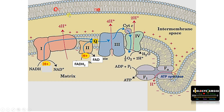First you should understand the inner mitochondrial membrane. This is the outer membrane of mitochondria and this is the inner membrane where all multi-enzyme complexes are located and where electron transport chain occurs. The space between the outer membrane and inner membrane is called the inter-membrane space.